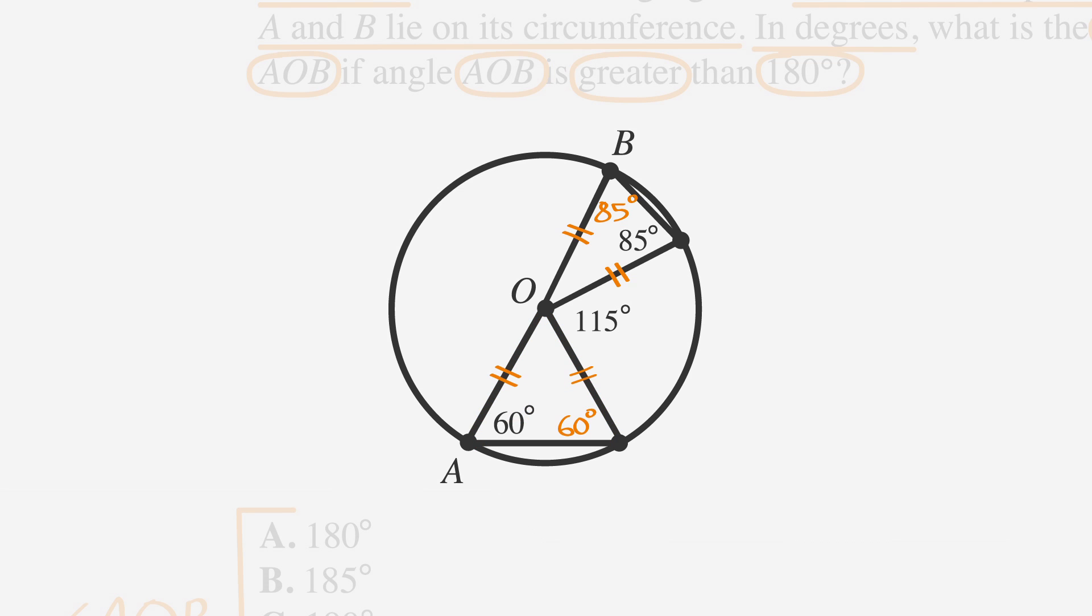In this triangle, the unmarked angle is 85 degrees, and in this triangle, we can mark the missing angle to be 60 degrees. Since we know that the three interior angles of a triangle must add up to 180 degrees, we can solve for the missing angle in each triangle.